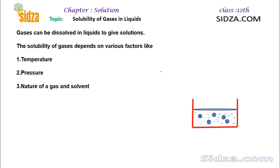Hi all, welcome to sitza.com. In this video we will learn about the solubility of gases in liquids. We know a gas can be dissolved, can be soluble in any particular liquid. The solubility of any gas in a given liquid depends on certain factors: number one is temperature, second is pressure of the gas, and the third one is the nature of the gas and the nature of the solvent. So these are the three important factors on which the solubility of a gas depends.